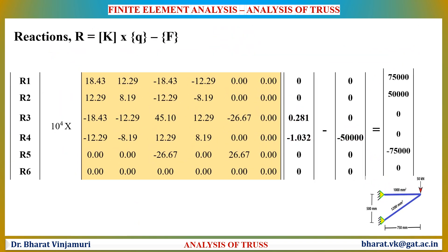The reactions for a truss element can be obtained by the equation R = K × Q − F. The displacement vector values and nodal values are substituted. The reactions will be in newtons. The user must carefully perform the matrix multiplication.